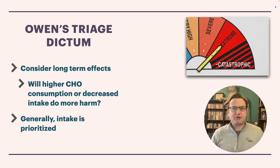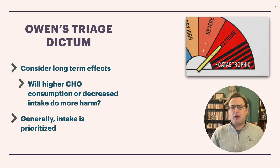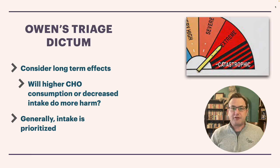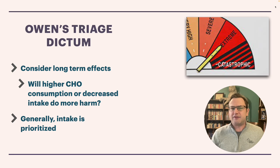Remember also Owen's triage dictum — what is the most important, most severe potential outcome? Consider the long-term effects of what you're suggesting. If you have a non-adherent diabetic patient and your other option is forcing them onto a strict diabetic diet where they just won't eat and will be miserable, what's going to do more harm in the long run — that increased carbohydrate intake, or that decreased intake? The Academy stance is that intake should be prioritized, and I would agree with that.